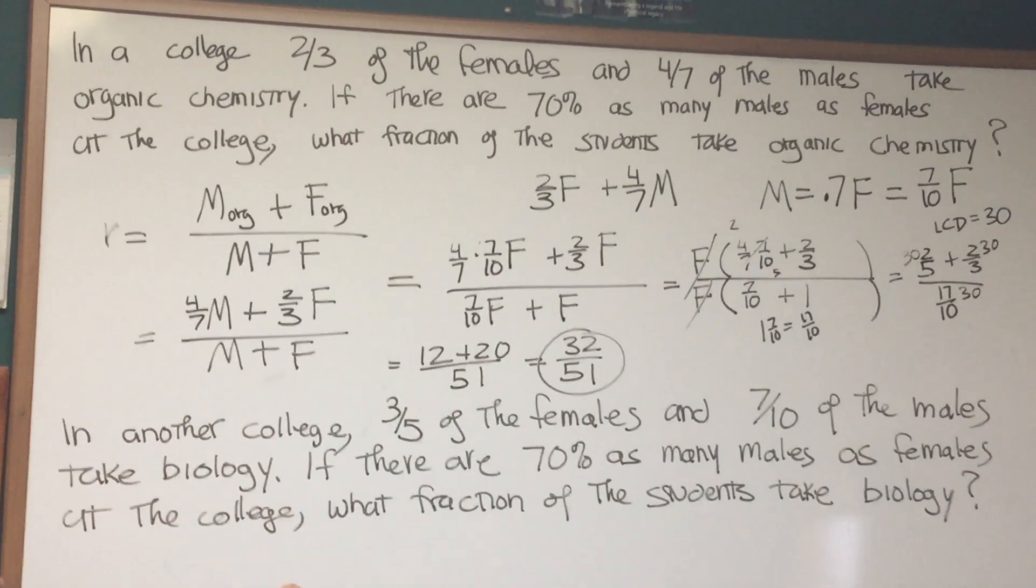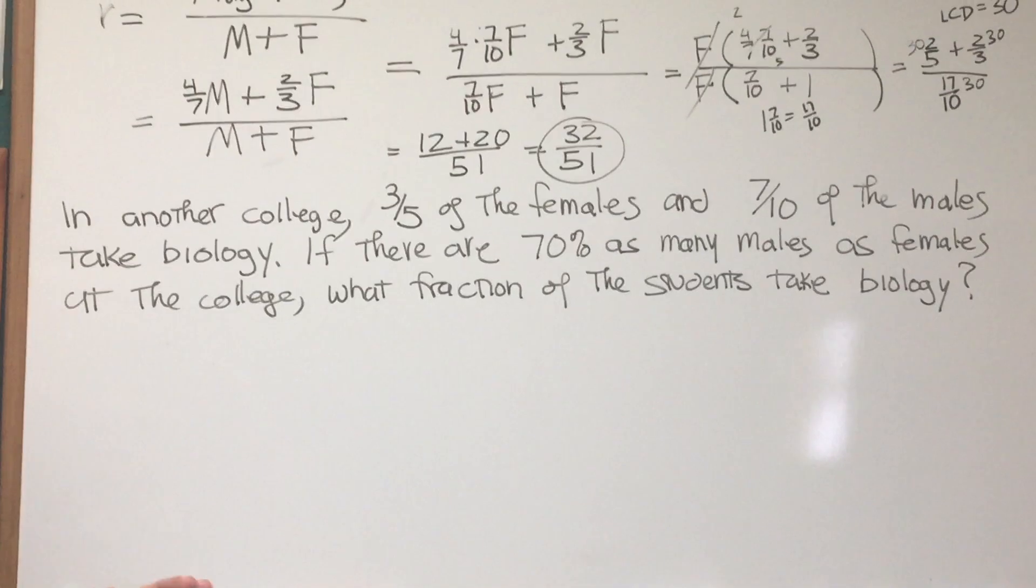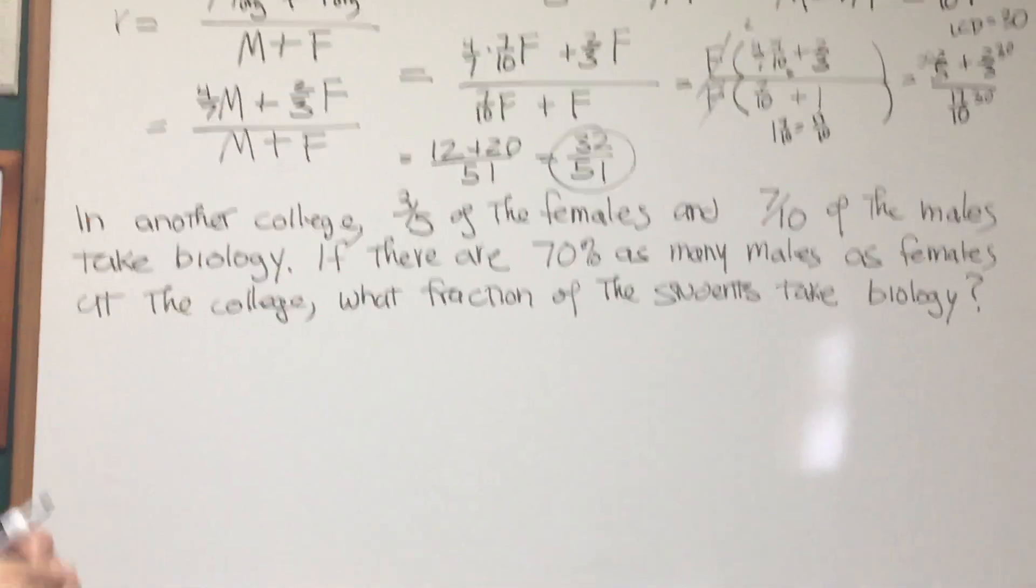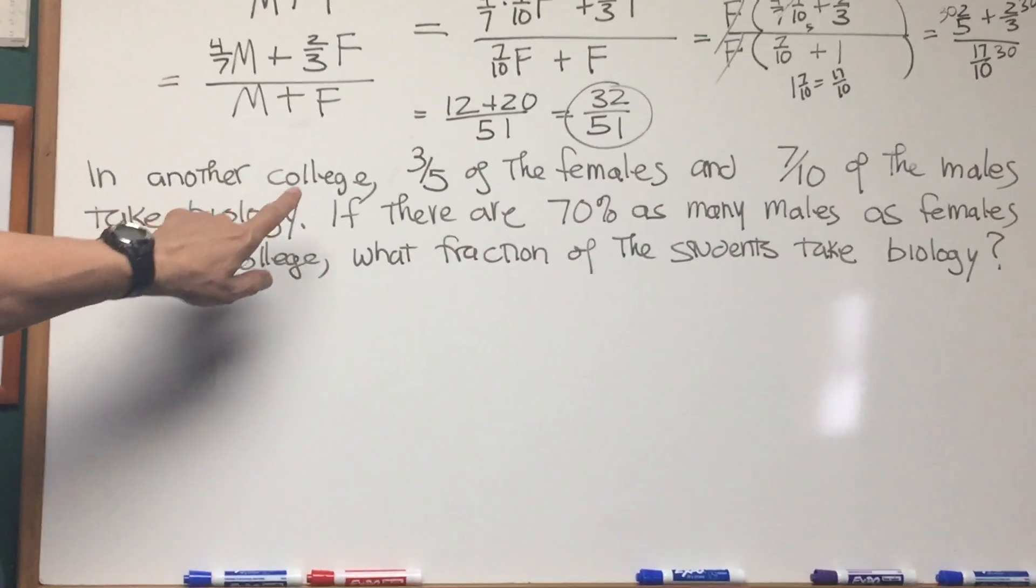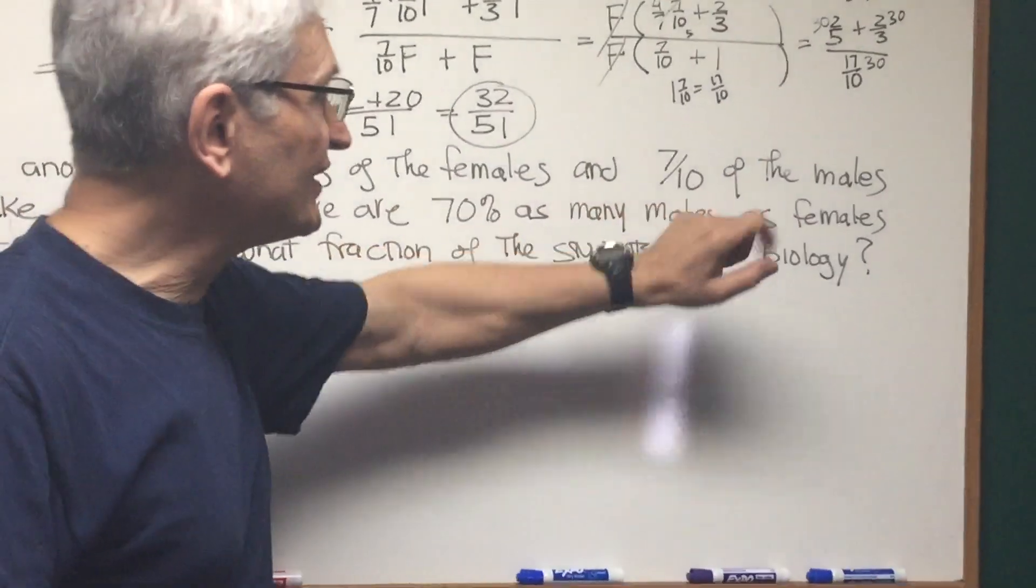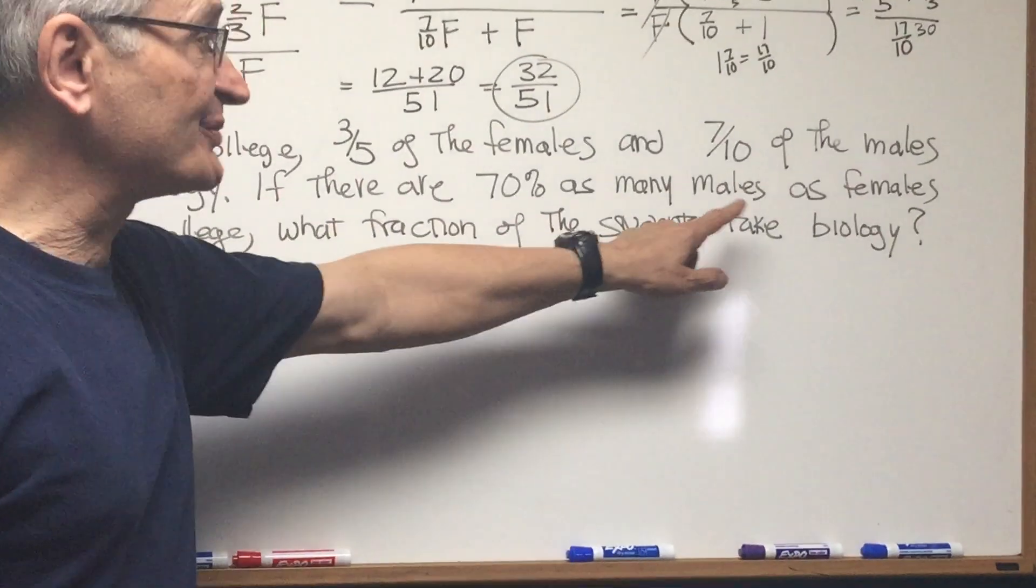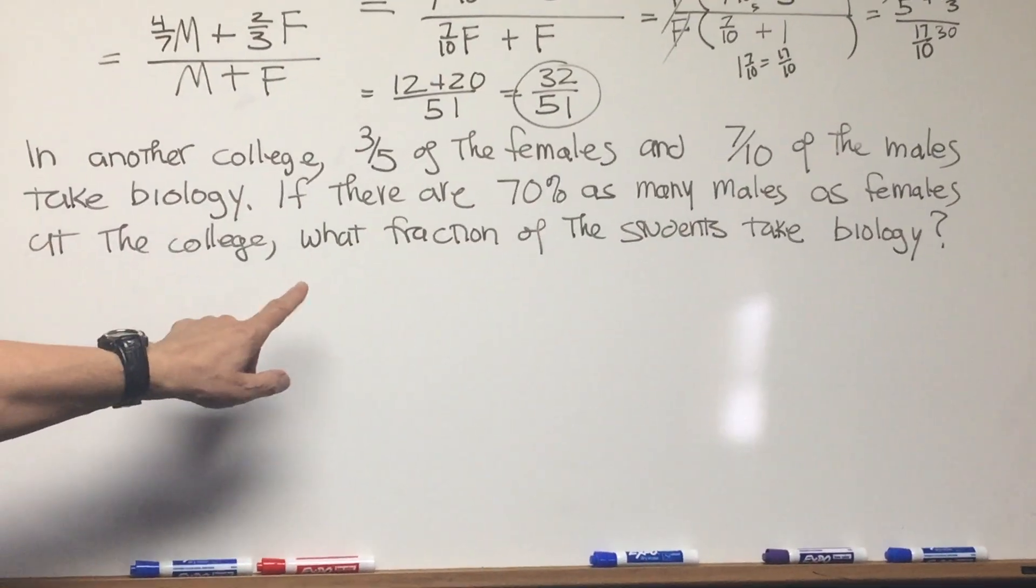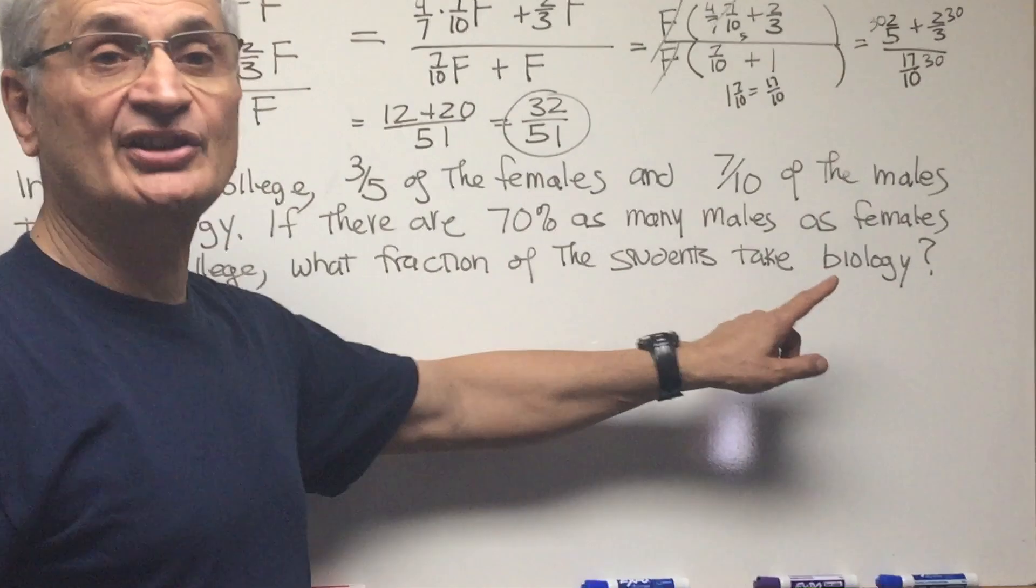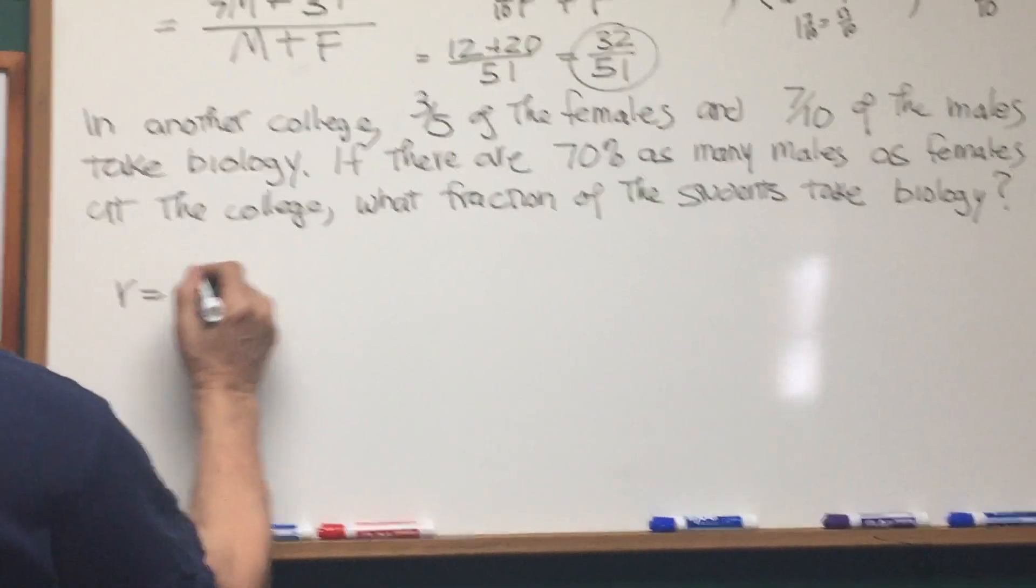Very similar problem here in the second problem, but we're going to be doing it by a completely different approach. Let's read it together. In another college, three-fifths of the females and seven-tenths of the males take biology. If there are seventy percent as many males as females at the college, what fraction of the students are taking biology? All we're looking for is a ratio. Males taking bio plus females taking bio over the total population of males plus females.